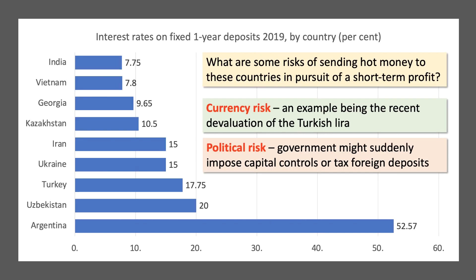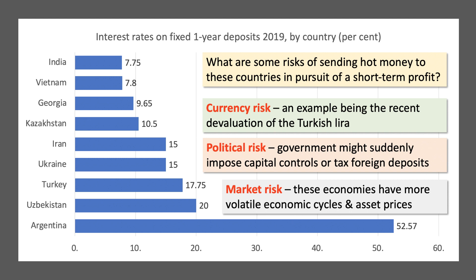The second risk is harder to calibrate, but it's there — political risk. The government might suddenly impose capital controls, so you can't move your money out of a country without risk of loss. Or they might impose a special tax on foreign savings deposits, which brings down your return. Arbitrary political intervention increases risk. The third risk is the more generic market risk: these countries have more volatile economic cycles and asset prices, exposing you to a much greater degree of economic or market risk. So although the interest rates on these accounts appear superficially very attractive, many of these countries have high inflation, volatile political outlooks, and volatile currencies. It's by no means certain that hot money would flow into these countries on the back of just a high nominal rate of interest.